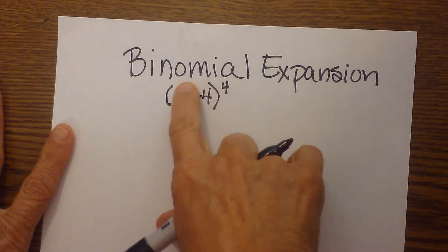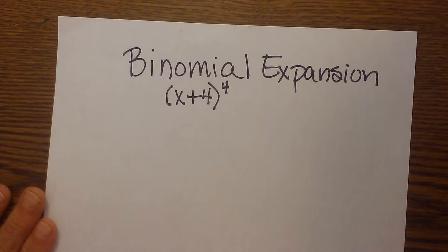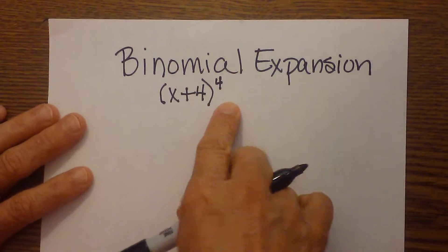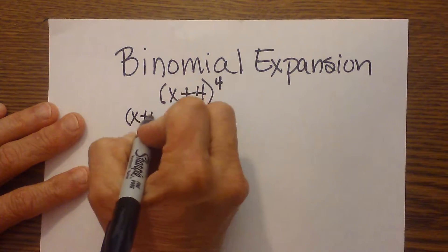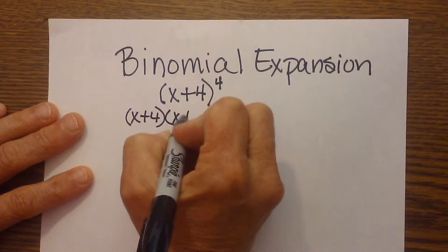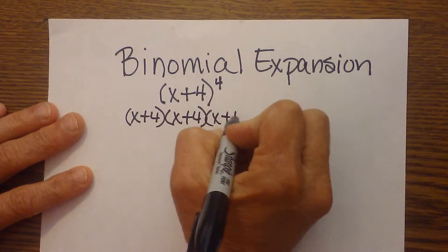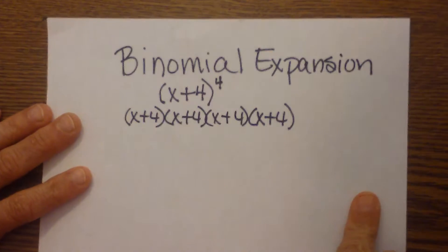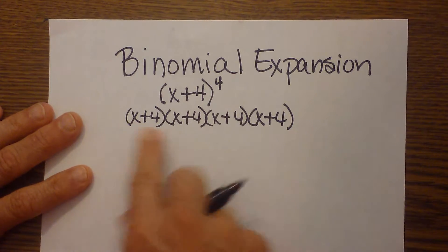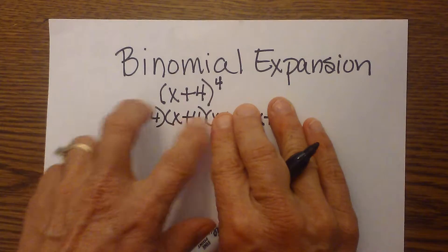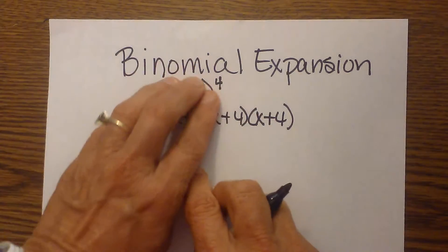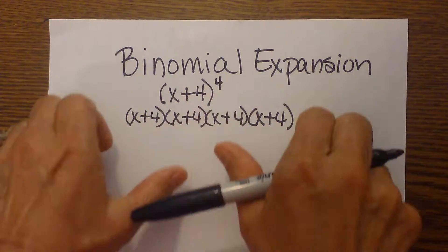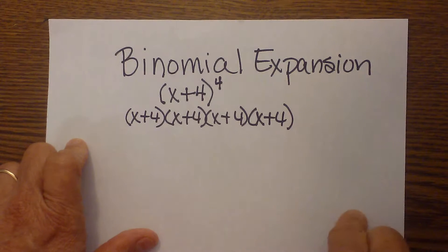I have different ways I can expand and multiply that. Raising a binomial to the fourth power means I have four of these terms: x plus four, times x plus four, times x plus four, times x plus four — and I have to multiply all of those together. I can use FOIL, multiplying the first two together, then the next two, and then multiply the resulting trinomials together.